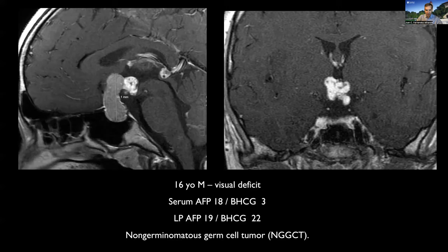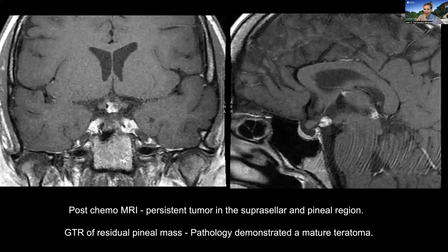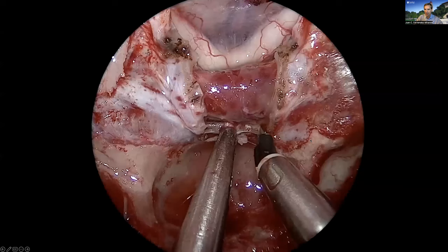It's not all about craniopharyngiomas — sometimes we have other tumors involving the hypothalamus. This 16-year-old presented with a combined sellar, suprasellar, and pineal region tumor, initially treated with chemotherapy with a relatively good response, but residual tumor persisted in the hypothalamus and a pineal mass proven as mature teratoma, so we decided to perform surgery. Note how narrow the space is between the optic apparatus and the pituitary gland — the dorsum sella is in my way to reach the hypothalamus. I decided to remove the pituitary gland entirely in this case because this patient has no pituitary function and there is no chance of recovery, requiring instead of pituitary transposition, a pituitary resection.